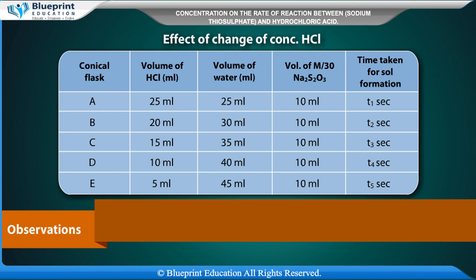Effect of change in concentration of HCl: Flask A: 25 ml HCl, 25 ml water, 10 ml Na2S2O3, time = T1 seconds. Flask B: 20 ml HCl, 30 ml water, 10 ml Na2S2O3, time = T2 seconds. Flask C: 15 ml HCl, 35 ml water, 10 ml Na2S2O3, time = T3 seconds. Flask D: 10 ml HCl, 40 ml water, 10 ml Na2S2O3, time = T4 seconds. Flask E: 5 ml HCl, 45 ml water, 10 ml Na2S2O3, time = T5 seconds.